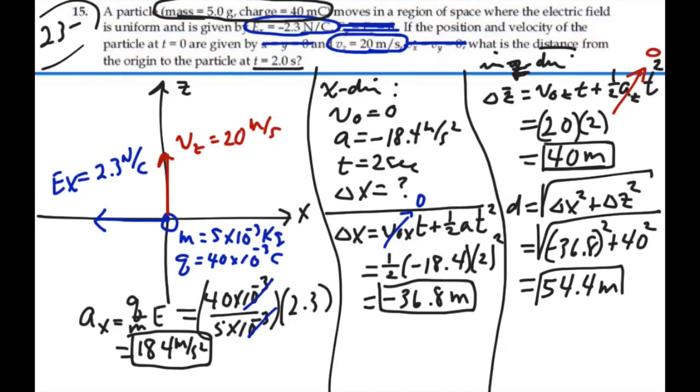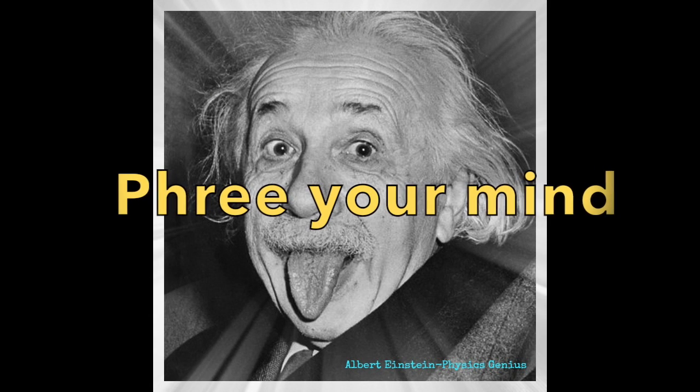So our distance from the origin after two seconds, based on these two dimensions, looking at them independently and then superimposing them together, is 54.4 meters from the origin at t = 2 seconds.